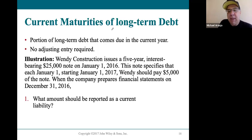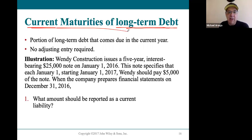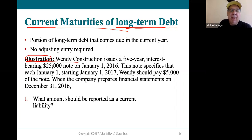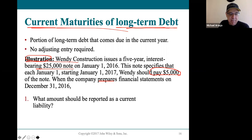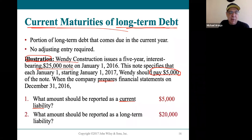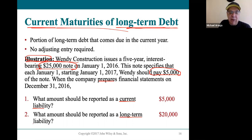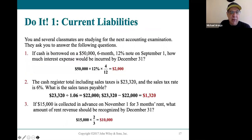One thing you might not have known: companies often have long-term debt, but the current portion of that long-term debt due this year is counted as a current liability. For example, a construction company with a five-year interest-bearing $25,000 note paying back $5,000 per year would classify the $5,000 due that year as a current liability. The remaining $20,000 goes under long-term liabilities on the balance sheet.